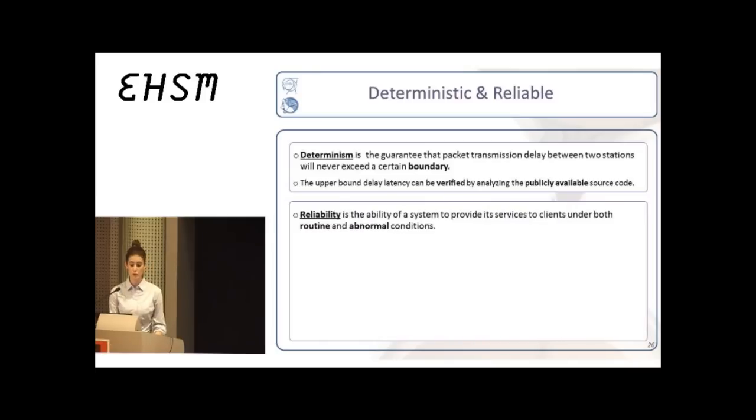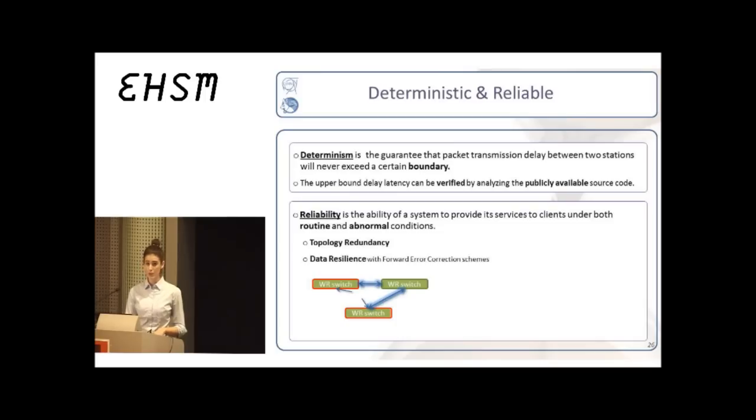Reliability now refers to the ability of a system to provide its services under both routine and abnormal conditions. White Rabbit supports topology redundancy. So, every device is connected to a network through more than one different path. And if a path breaks, the recovery through the redundant one takes place fast enough so that there is no data loss. There is also data resilience. Ethernet data frames through forward error correction schemes are translated to several different frames that travel independently in the network. And even if some of the frames get lost, the recovery of the information through the remaining ones is still possible.